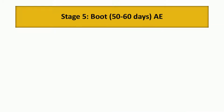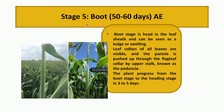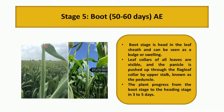Coming to the fifth stage, the boot stage, which occurs 50 to 60 days after emergence. If you see the plant, it has the head covered by the leaf sheath. You can see a bulge and swelling-like structure — this is called the boot stage. In this stage, the leaf collars of all the leaves are visible.